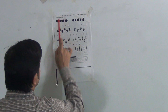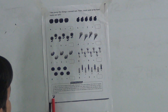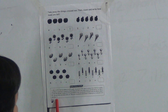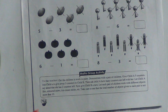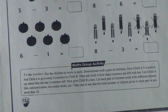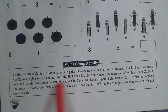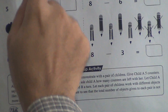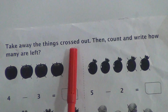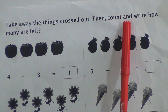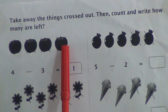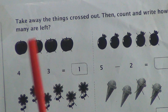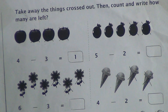I am solving your book page 72. The book is 'Success with Maths Ahead.' The instruction says: take away the things crossed out, then count and write how many are left. First you have to count how many there are in total, write that here, and then write how many are left after taking away.